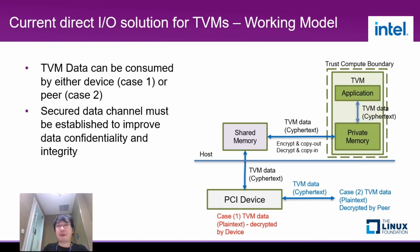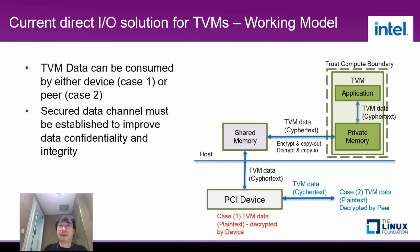The right side figure shows the working model for current direct IO solution. The TVM data can be consumed by either device or remote peers, so there are two cases — case 1 in red and case 2 in blue. But in either case, a secured data channel must be established to improve data confidentiality and integrity. As you can see, encrypted data is transferred to shared memory and along the data path to the device.